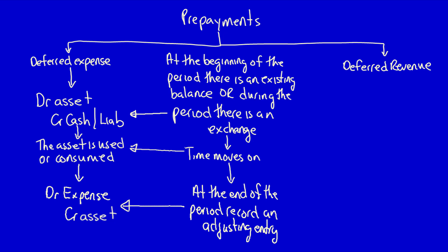Let's look at the deferred revenue. For the deferred revenue, you could also at the beginning of the period have an existing balance on the trial balance, or during the period there's an exchange. In this case, the customer would pay in advance for a product or a service they have not yet received. This would result in a debit to cash and a credit to a liability account, because we owe the customer a good or a service.